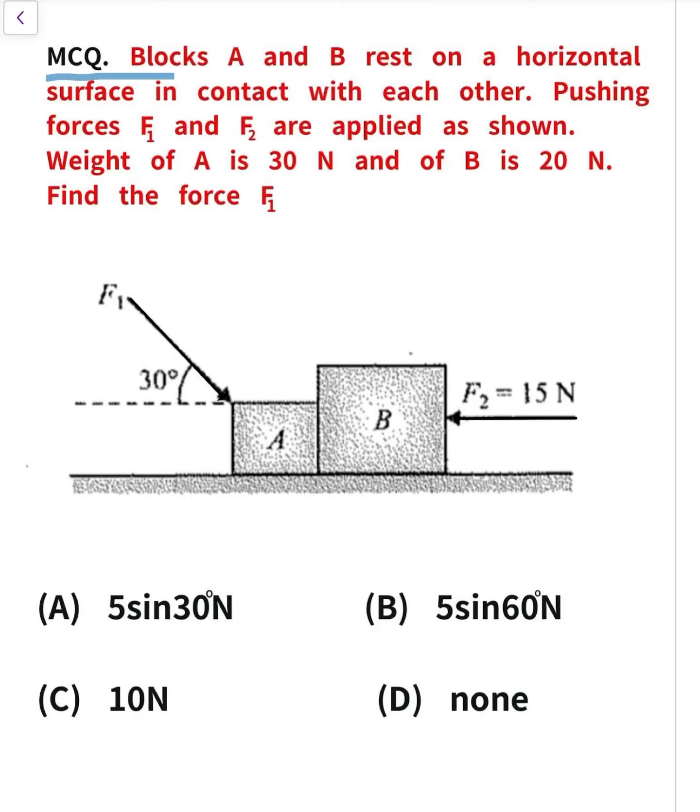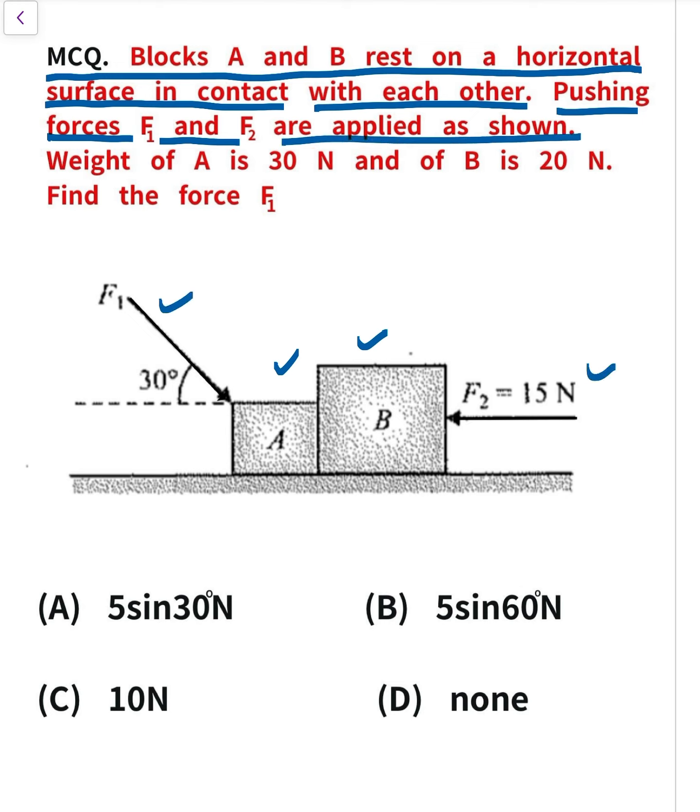Now question of the day MCQ. Block A and B rest on a horizontal surface in contact with each other. Pushing forces F1 and F2 are applied as shown. Here F1 and here F2 force. Weight of A is 30 Newton and weight of B is 20 Newton. They always work downward, 30 Newton and 20 Newton. Our goal is to determine, find the force F1.